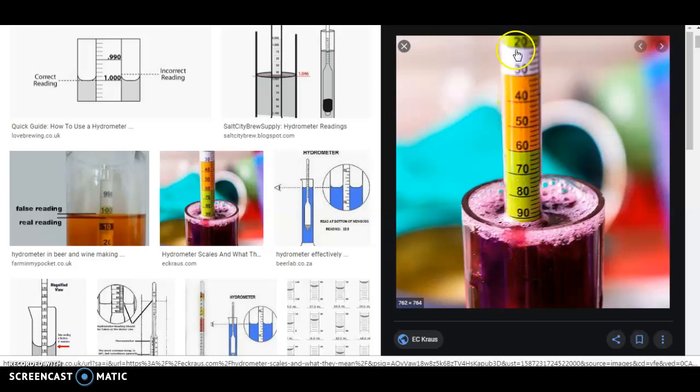You see this reading here goes from low at the bottom up to high, and that reads 1.092. There's a two there - you get two, four, six, eight, ten - that's 1.092. If that's the starting, if that's how sweet you want it, it's a saccharometer at this point.